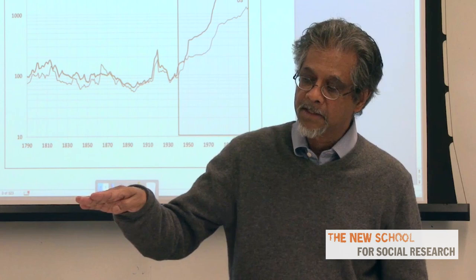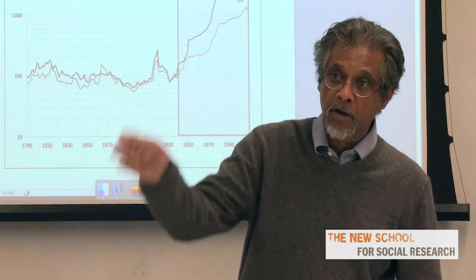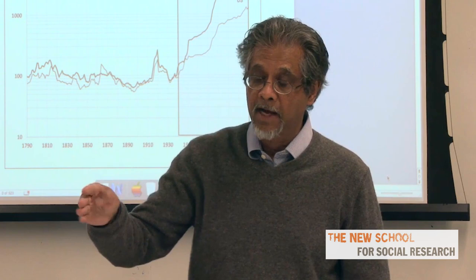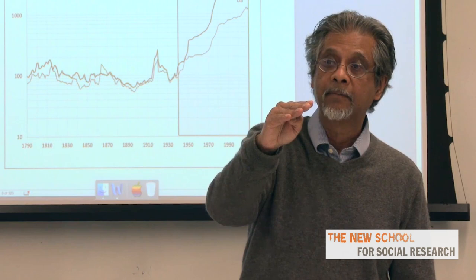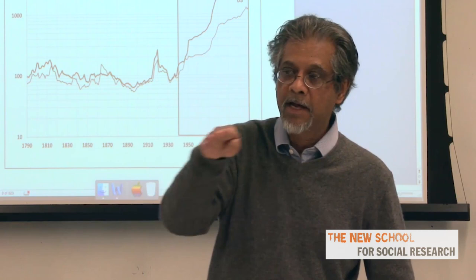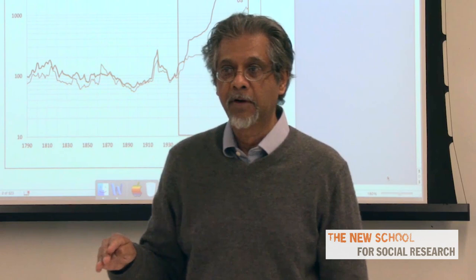Secondly, a given growth rate implies that output, on a log-linear scale with time on the horizontal axis and the log of output on the vertical axis, a growth path is equivalent to the slope of a line. So a given growth path implies a particular slope. For that same reason, you can't tell the level from knowledge of the growth path, because all lines with the same slope will have the same growth path but different levels of output and employment.